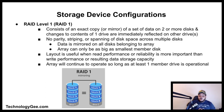RAID 1 consists of an exact copy or mirror of data on two or more disks — changes to one drive are immediately reflected on the other. This configuration offers no parity, striping, or spanning; the array can only be as large as the smallest member disk. It is useful when read performance or reliability is more important than write performance, and the array will continue to operate as long as at least one drive is operational.